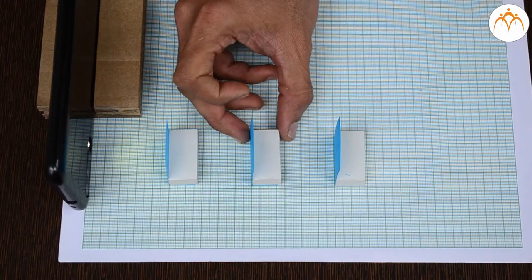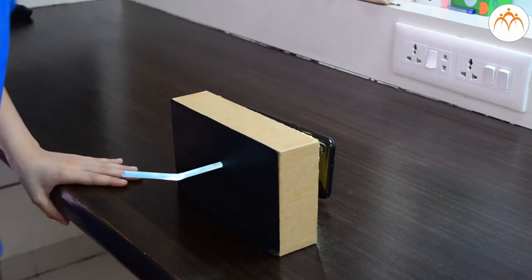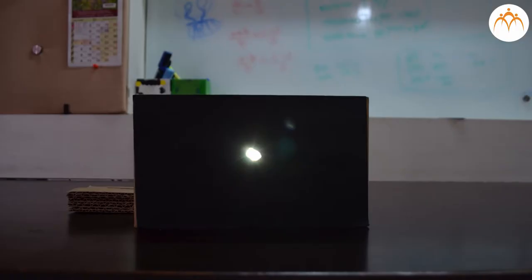Instead of paper let us take this bent straw. I'll attach it on the card sheet like this. Can I see light when I bend it? Light waves travel much faster than most other waves.